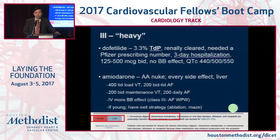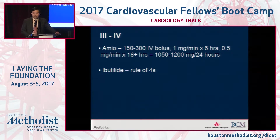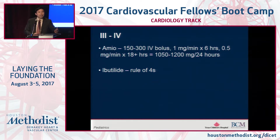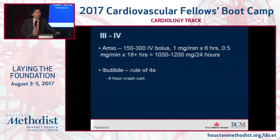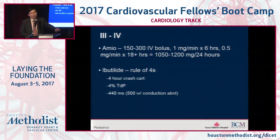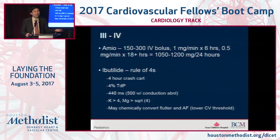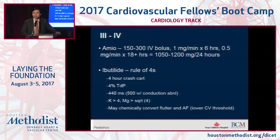You'll use amiodarone a lot and commonly see dofetilide. Ibutilide is the IV form of dofetilide, and it follows a rule of fours: keep the crash cart available for about four hours afterwards, it has about a 4% torsadogenic risk, keep QTc less than 440 ms (or less than 500 ms with a conduction abnormality), potassium should be greater than 4, and magnesium greater than 2. It may convert atrial flutter or AFib back to sinus, and if it doesn't, it lowers the cardioversion threshold. It may be used by an electrophysiologist and is known by the brand name Corvert.